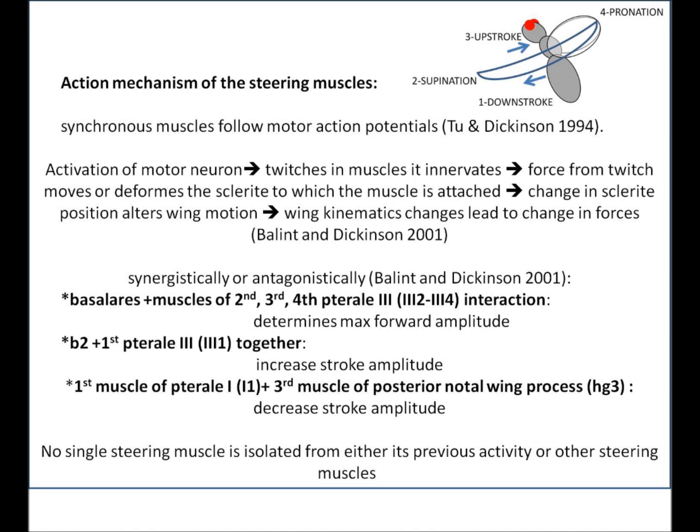Different muscles can act synergistically — with some redundancy between them — or even antagonistically. The basilars and the Terrel 3 muscles two to four interact to determine the maximum forward amplitude. When B2 and the first Terrel 3 muscle interact, together they increase stroke amplitude, whereas the first Terrel 1 and HG3 — the posterior notal wing process — when they fire together, they decrease stroke amplitude. No single steering muscle can be considered in complete isolation from either its previous activity or other steering muscles.